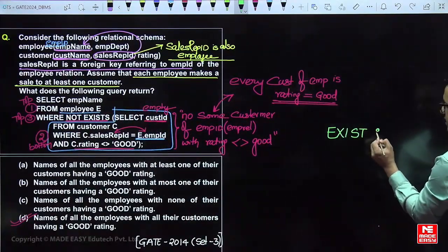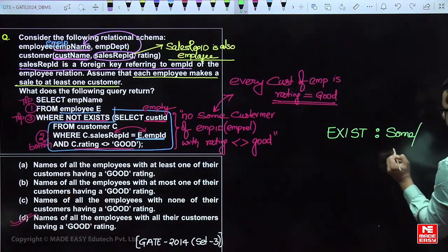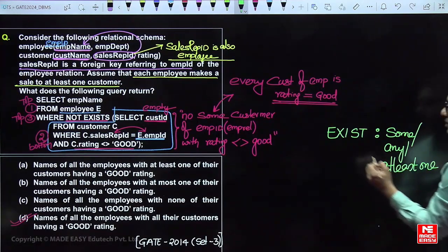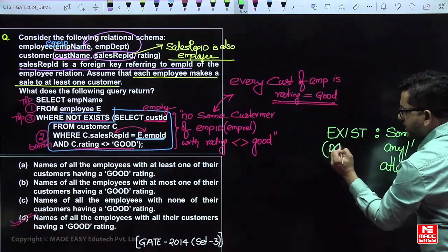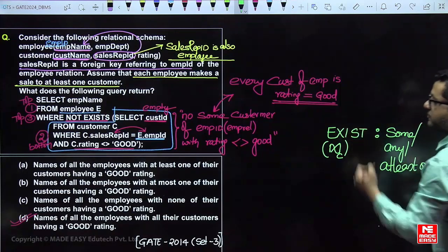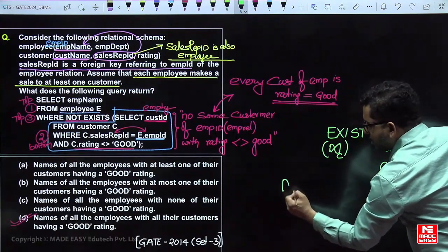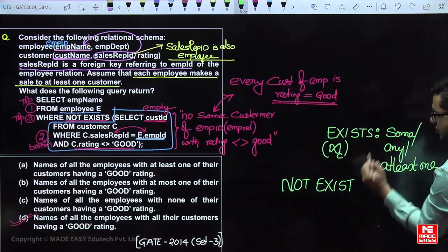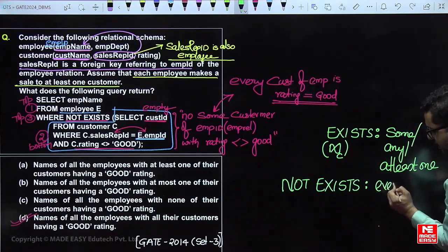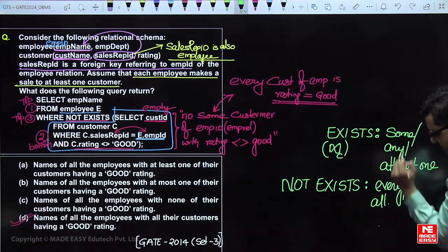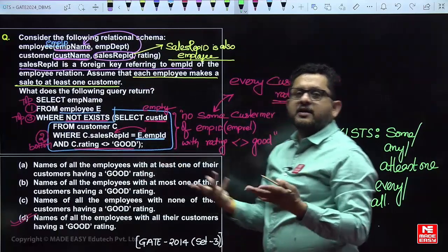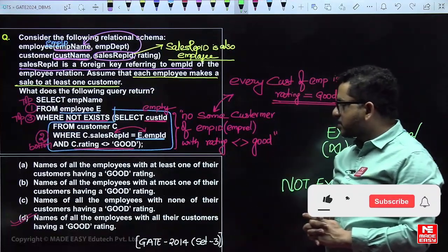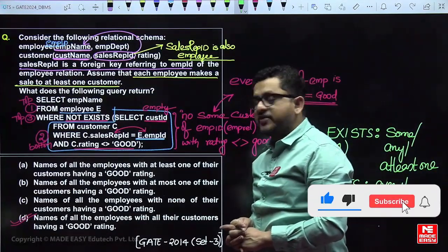EXISTS behaves like SOME, ANY, or 'at least one' in relational algebra — similar to join queries with conditions or cross product with selection. NOT EXISTS behaves like 'no one' or 'every/all'. With this basic idea, you can directly answer such questions. The answer to this question is: names of all employees with all their customers having a good rating.